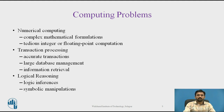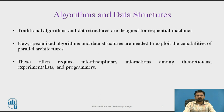Communication with the outside world takes place through the input and output elements of the computer system, and data is input into a computer through external hardware devices, where it gets processed. Regarding algorithm and data structure, once input starts to get processed, traditional algorithms and data structures are designed for sequential machines. Now, specialized algorithms and data structures are needed to exploit the capabilities for parallel characterization.